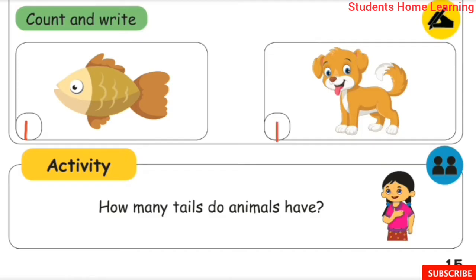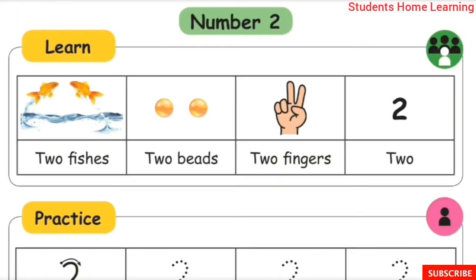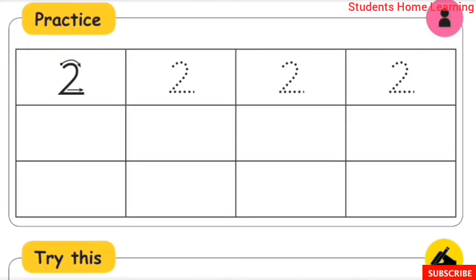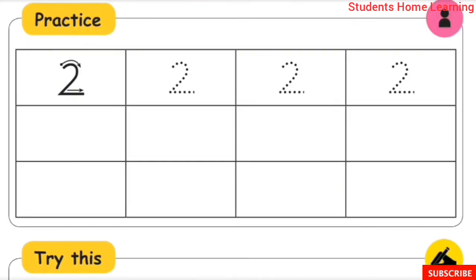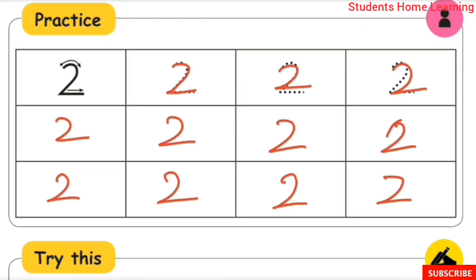Activity: how many tails do animals have? Number 2 — Learn: 2 fishers, 2 beads, 2 fingers. Write 2 objects. Practice writing 2.